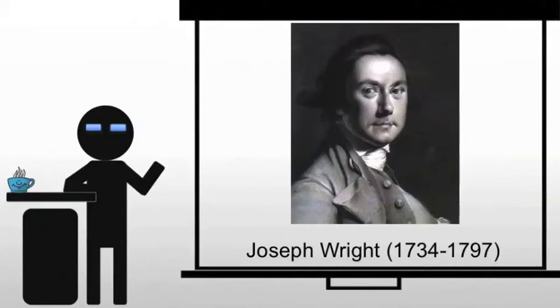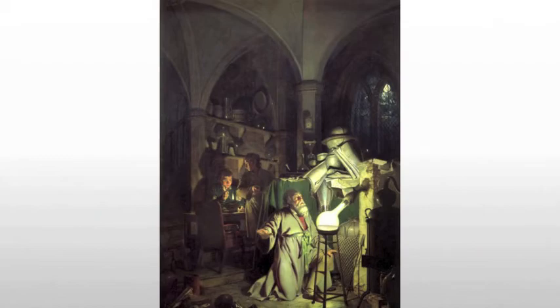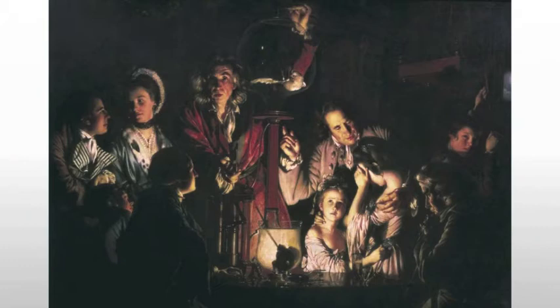Joseph Wright is really going to take these Enlightenment ideas and apply them to art. To him, technology and science will begin to fuel the arts. His hallmark is the use of a single light source within the image, frequently tied to some form of scientific inquiry or discovery.